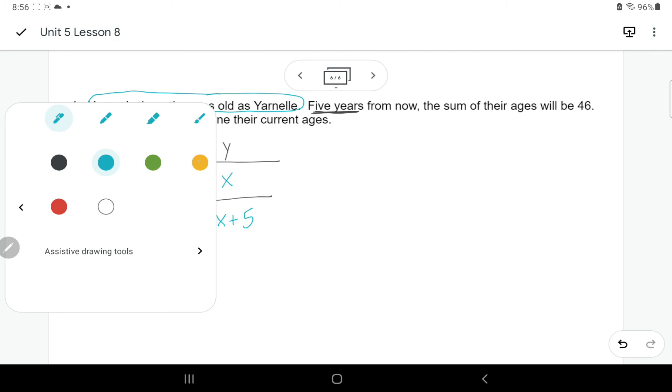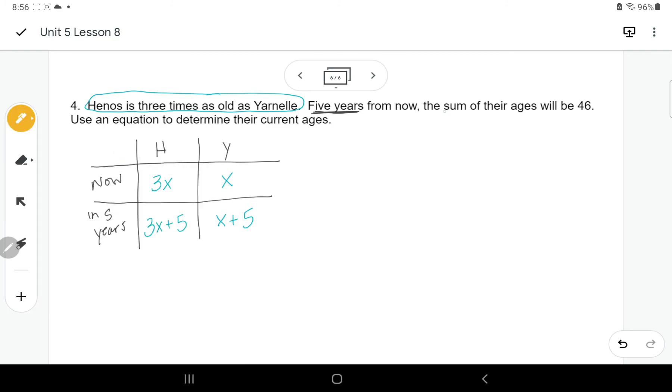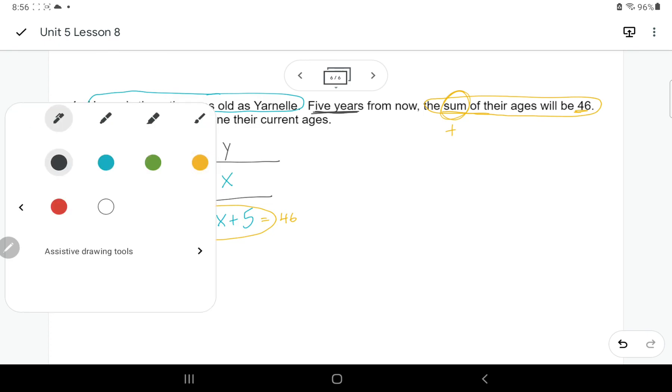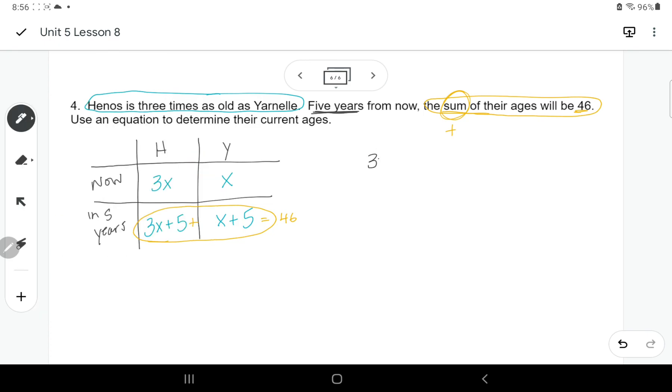Then we want to look at the other part. It says their sum of their ages in five years will be 46. So the word sum means plus. So we're going to take these two ages, add them together, and that would equal 46. And that's how we're going to make this equation.